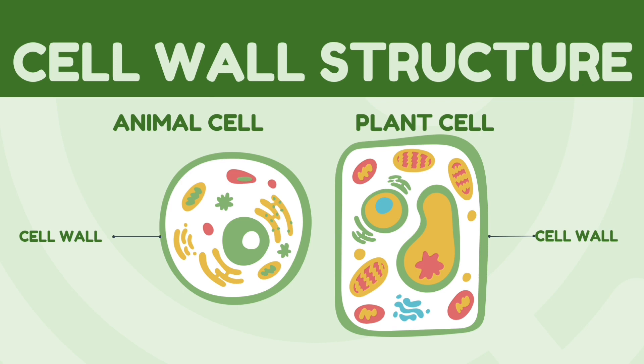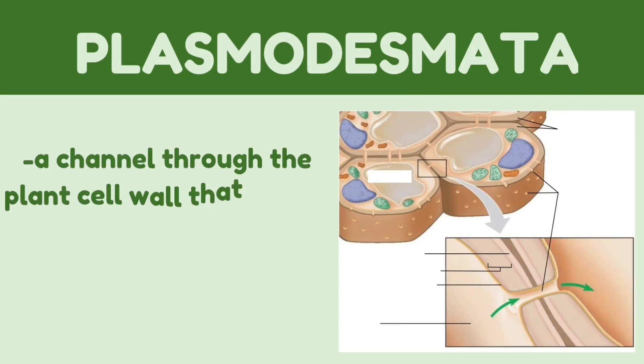You may be wondering what is the purpose of plants having cell walls. Plant cells require a strong framework in order to grow up and outward, which explains why the cell wall is so important. The plant as a whole would collapse in the absence of cell walls. The cell wall contains microfibrils, cellulose, and the most significant component called plasmodesmata.